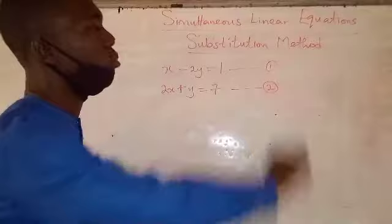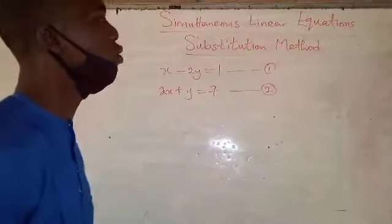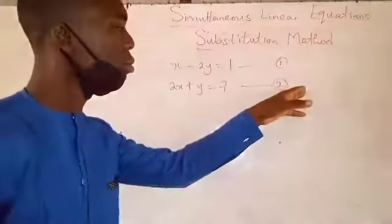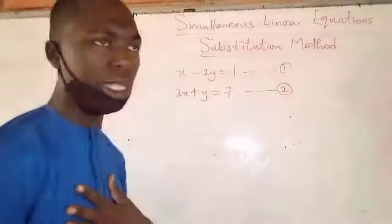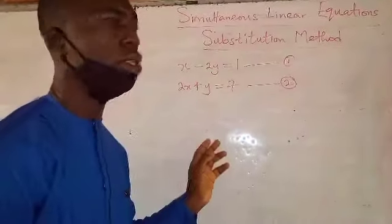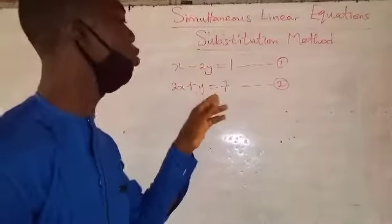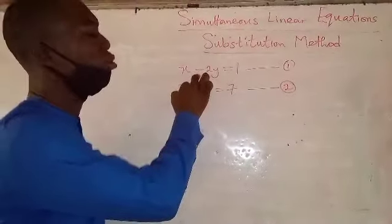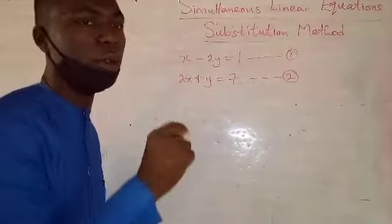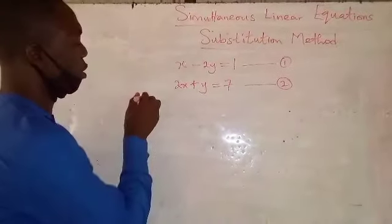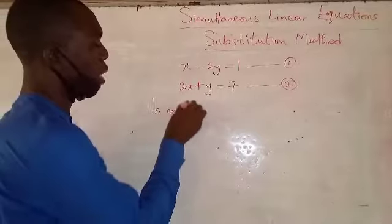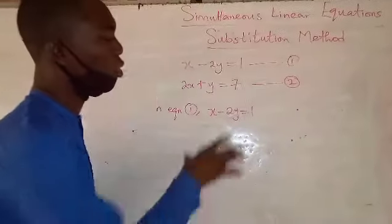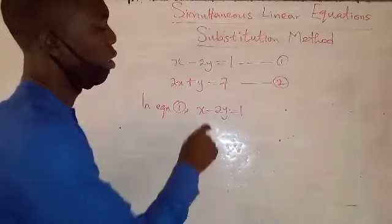We are going to solve these two equations using the substitution method. The first thing to do in using this method — we've been given equation one and equation two — we are going to derive our equation three from any of these two equations. I may decide to use equation one or equation two. If I'm using equation one, I will try and make one of the variables the subject of the formula.